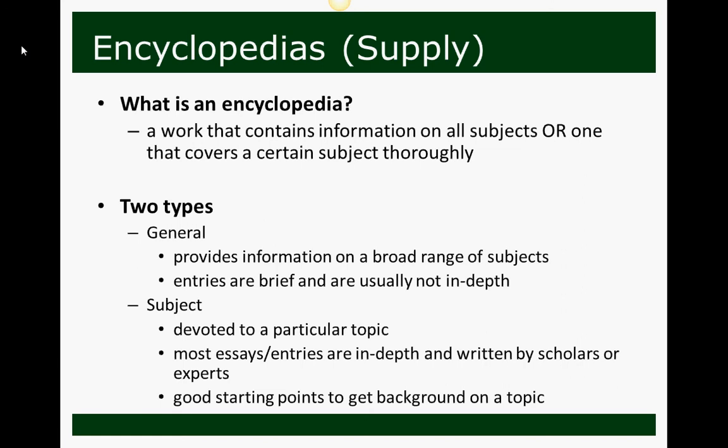A subject encyclopedia is a bit more in-depth. It's devoted to a particular topic, so similar to subject-specific dictionaries, you might have an encyclopedia of medicine. Most essays and entries are in-depth and written by scholars and experts. Both types of encyclopedias are really good starting points to get background on a topic, but the subject encyclopedia will give you a bit more depth.